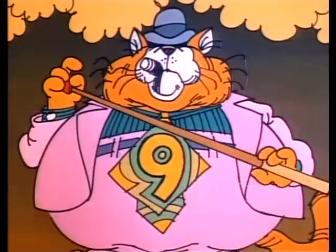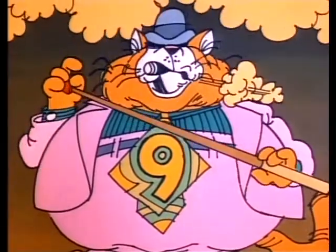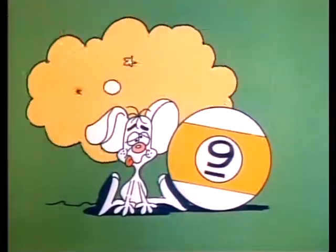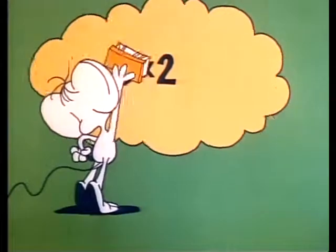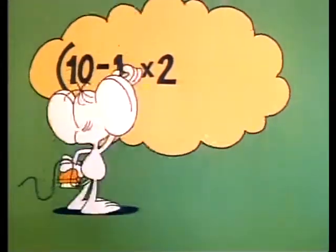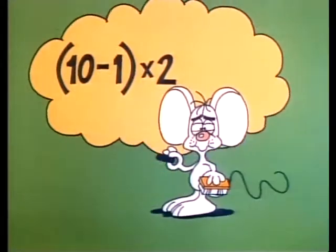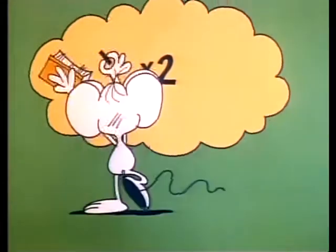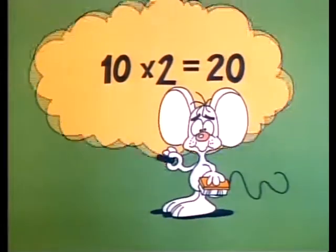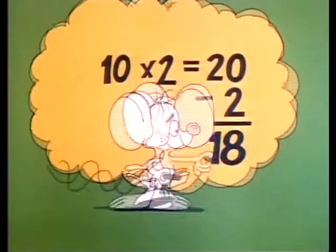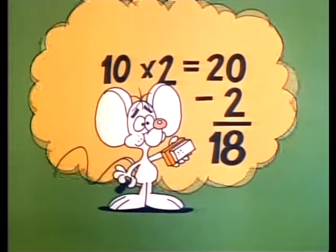Now the first thing to keep in mind when you're multiplying by 9 is that it's 1 less than 10. You see, 9 is the same as 10 minus 1. So you could multiply your number by 10 and then subtract the number from the result, and you'd get the same product as...